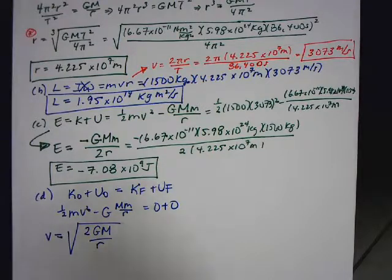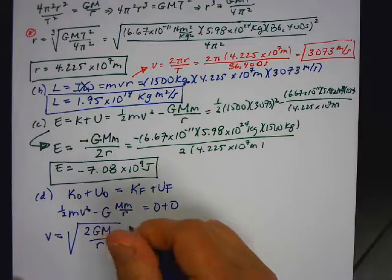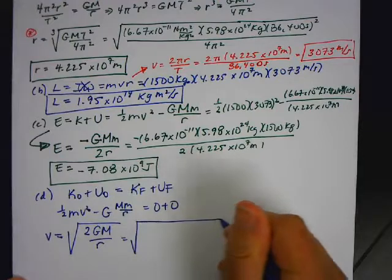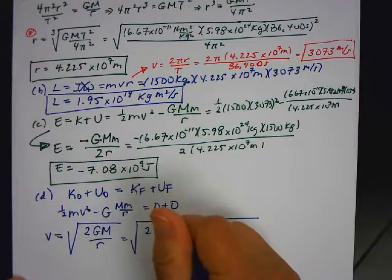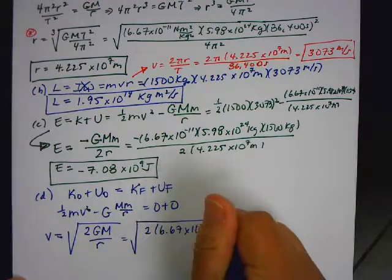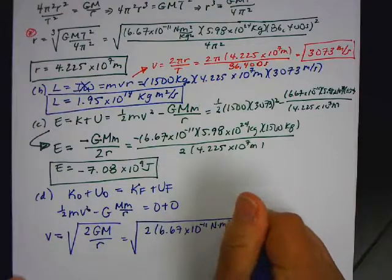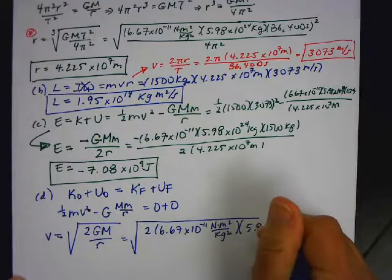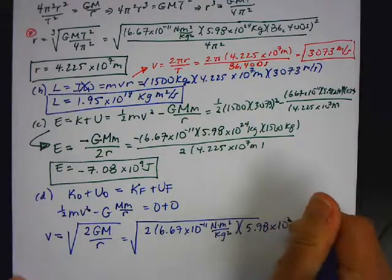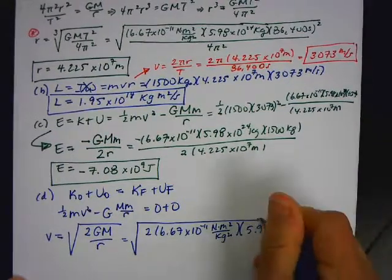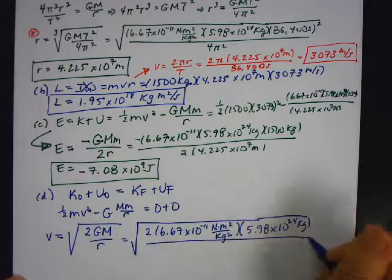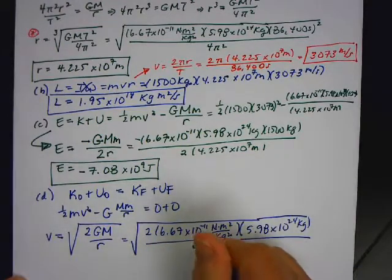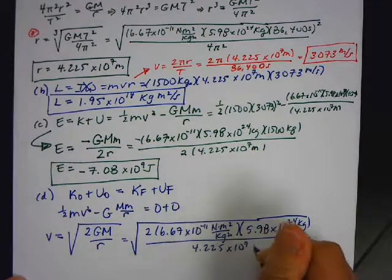So we substitute in our values 2, universal Newtonian gravitational constant, 6.67 times 10 to the negative 11 Nm² per kilogram² times the mass of the Earth, 5.98 times 10 to the 24 kilograms, divided by 4.225 times 10 to the 7.